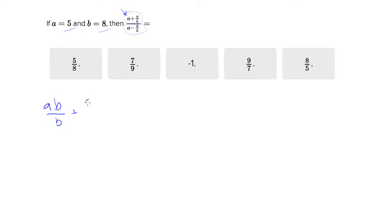So that plus a over b, all this divided by - I'm going to do the same thing on the denominator - so I'm going to change this again into ab over b minus a over b.